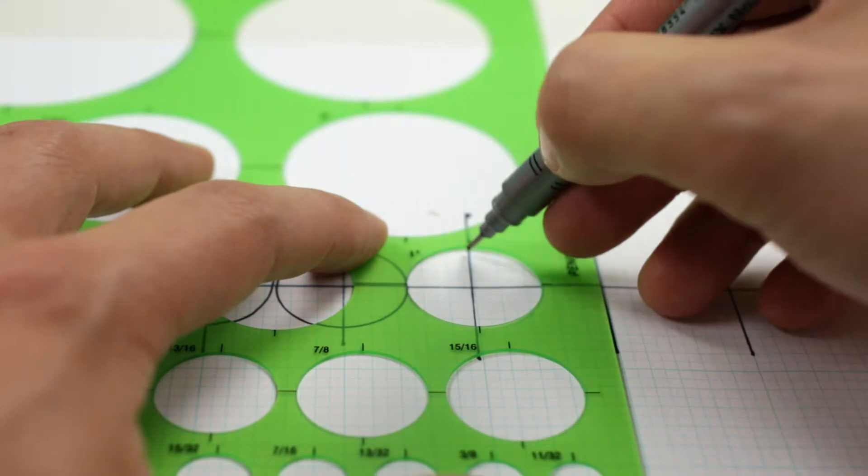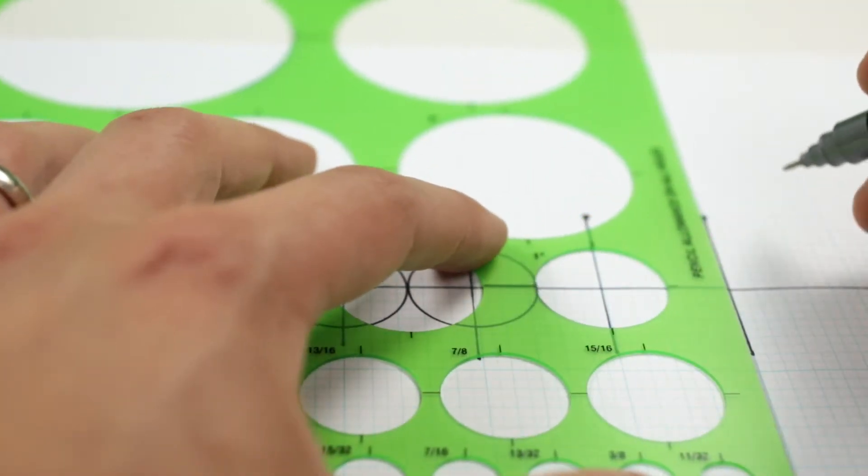Alvin templates are a great time-saving tool. They make it easy to consistently reproduce shapes.